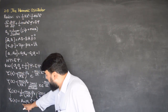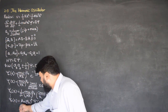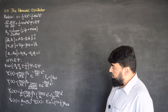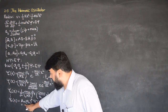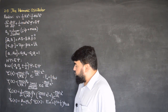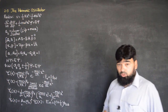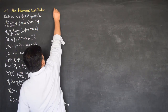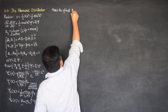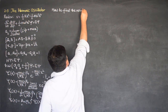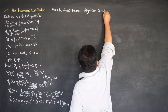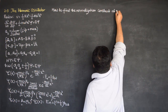Now, every time we find a state — for example ψ₃ — we have to normalize it and find the normalization constant, which is rather a difficult job. So we can find this normalization constant algebraically by doing some algebra. We will start this lecture with how to find the normalization constant algebraically.